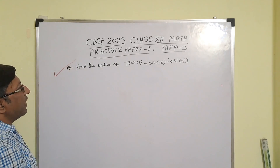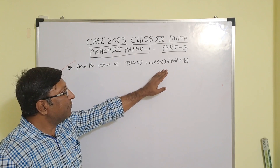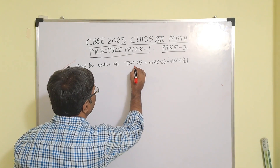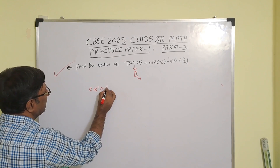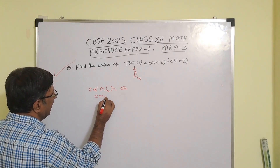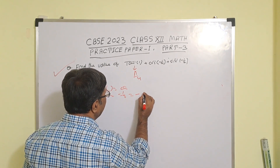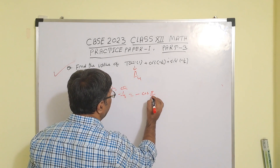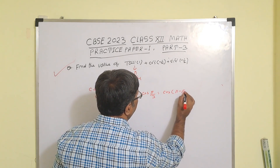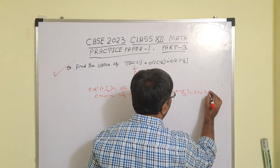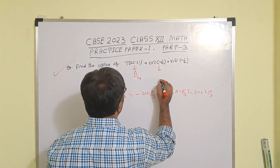Find the value of tan⁻¹(1) + cos⁻¹(−1/2) + sin⁻¹(−1/2). We know tan⁻¹(1) is π/4. For cos⁻¹(−1/2): let cos⁻¹(−1/2) = θ, so cos θ = −1/2. Since cos 60° = 1/2, this is −cos(π/3), which equals cos(π − π/3) = cos(2π/3). So cos⁻¹(−1/2) = 2π/3.